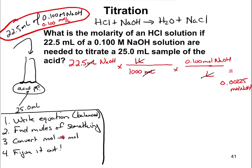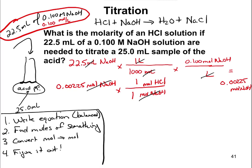Next step is to convert moles to moles. We have 0.00225 moles of NaOH, and we can convert that to moles of HCl. We do a mole-to-mole conversion — sodium hydroxide to HCl. We come up to our balanced equation; the coefficients are 1 and 1. So we're really not multiplying by anything different, but it's still an important step because it changes our units to moles of HCl. So now we have 0.00225 moles of HCl.